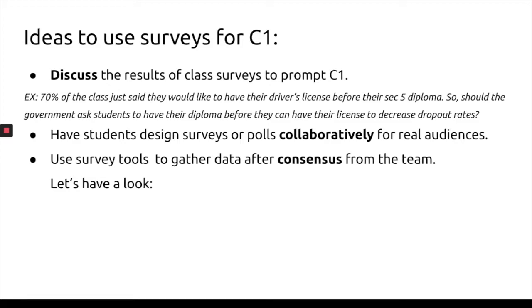Another idea: have students design surveys or polls collaboratively for real audiences. Students interact orally — in a physical classroom or online — to design their questions. This is a great way to study biases and how biases can infiltrate surveys. They interact orally to create those surveys and then carry them out for real audiences. The last survey idea is to use survey tools to gather data after reaching team consensus.